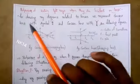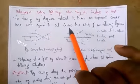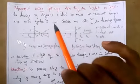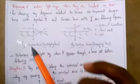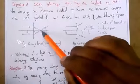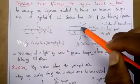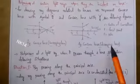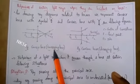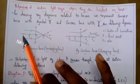For drawing ray diagrams related to lenses, we represent the convex lens and concave lens with shortened symbols as shown. In the convex lens, rays will converge after refraction. In the concave lens, rays will diverge after refraction. These are the important points.